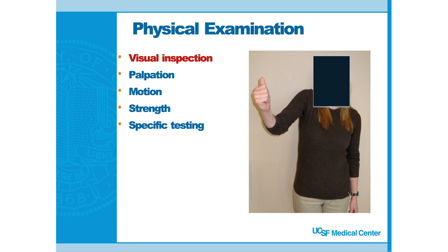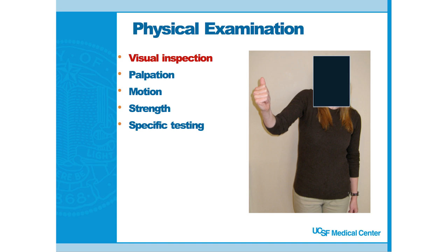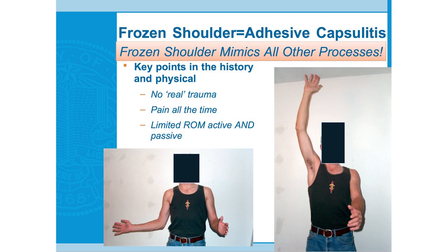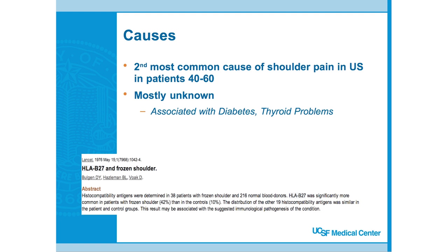It feels like you're trying to move a cement block, especially when you try to externally rotate. Patients often can't reach their buttock; a lot of women come in complaining they can't take their bra off. Key points: no real trauma, pain all the time, relatively fast onset — shoulder OA takes years — and limited active and passive range of motion. The patient can't externally rotate, adduct, or forward elevate the arm.